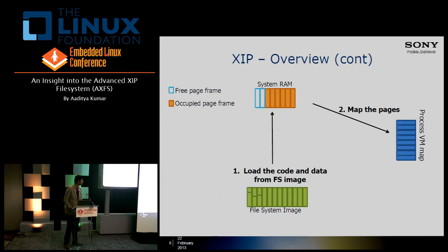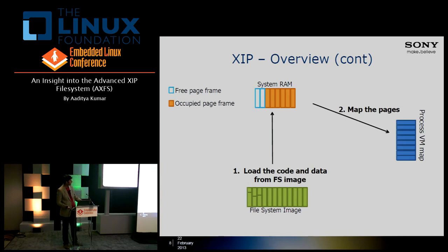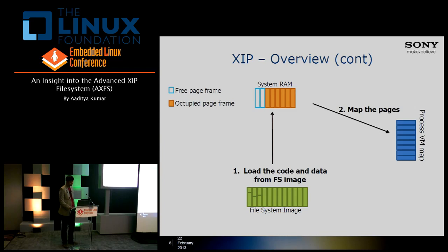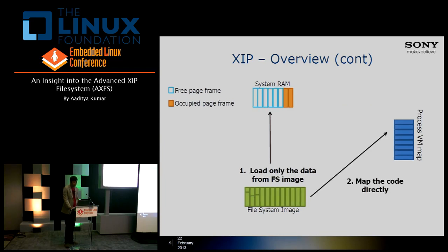This diagram summarizes what XIP is. When we have an executable in the file system image, if we don't do it the XIP way, we load the code and the data to system RAM and those pages are mapped into the address space of the process. The XIP way is that we load the data of course, but for the code pages — the executable pages — we directly map from the file system image on the media.